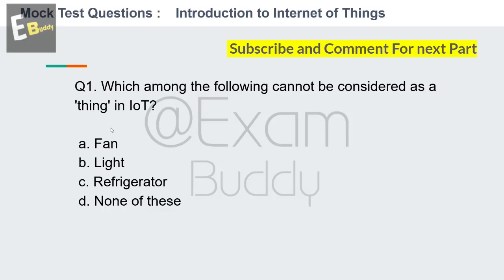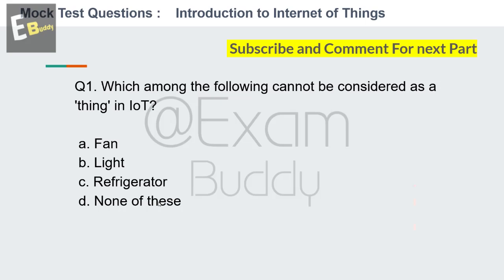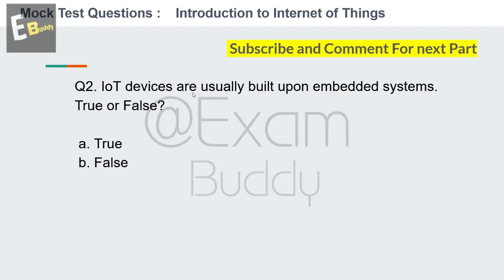Question number one: which among the following cannot be considered as a thing in IoT? Options: fan, light, refrigerator, none of these. The answer is D — none of these.